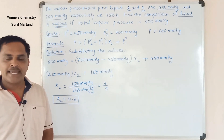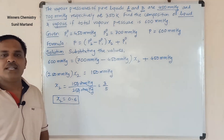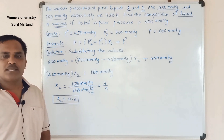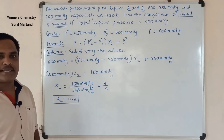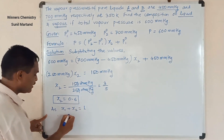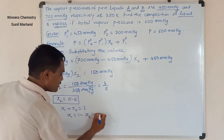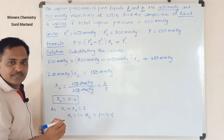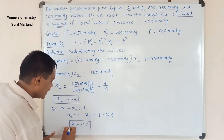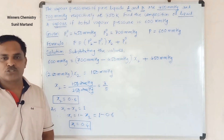We also need to calculate x1. Using the formula x1 plus x2 equals 1, therefore x1 equals 1 minus x2. Since x2 is 0.6, x1 equals 1 minus 0.6, which equals 0.4. These two values are the composition of the liquid state for this solution.